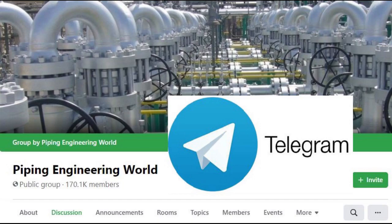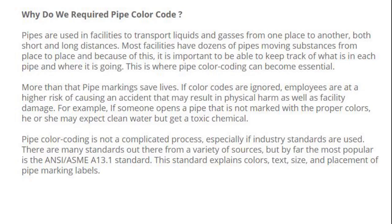Now let's begin the video. First of all, let's know about why we require pipe color codes. Pipes are used in facilities to transport liquids and gases from one place to another, both short and long distances. Most facilities have dozens of pipes moving substances from place to place, and because of this it is important to be able to keep track of what is in each pipe and where it is going. This is where pipe color coding can become essential.